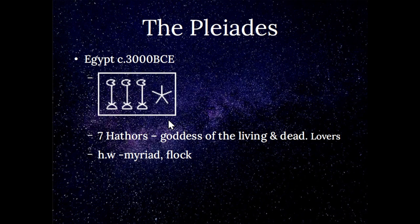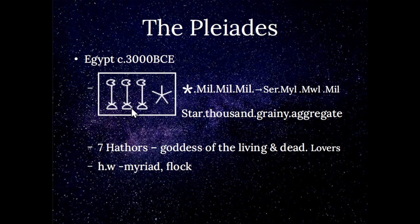Going over to Egypt — this is the hieroglyph for the Pleiades. They also talked about the seven Hathors, the goddess of the living and the dead and of lovers. They also called it the myriad or the flock. Applying this glyph to the Babylonian tradition, reading right to left: star, mil, mil, mil. In the Welsh language that means 'star thousands' or 'multitude grainy aggregate' — that is what the hieroglyph means when applying the Welsh language.